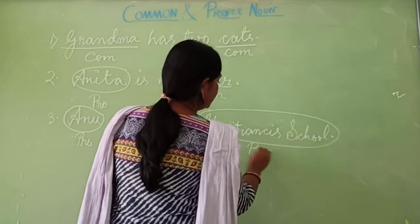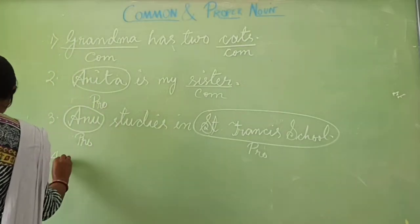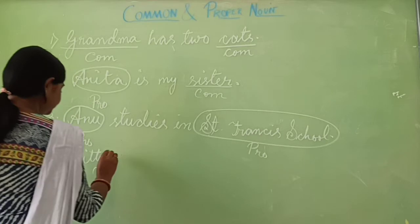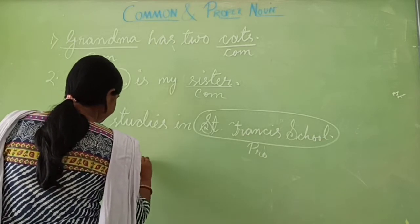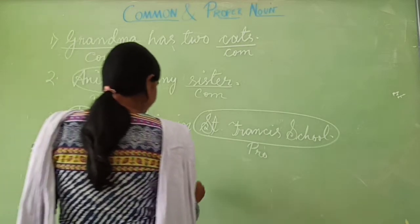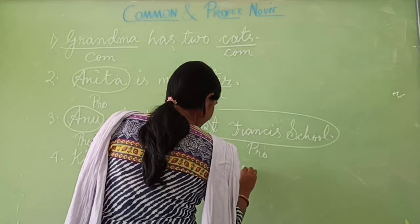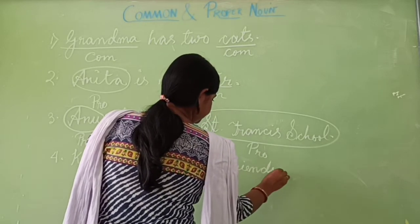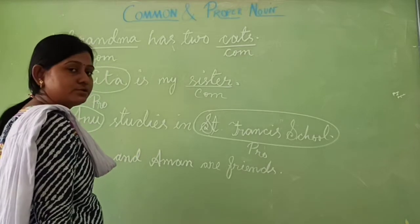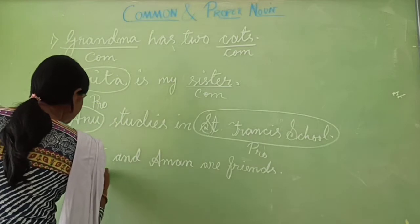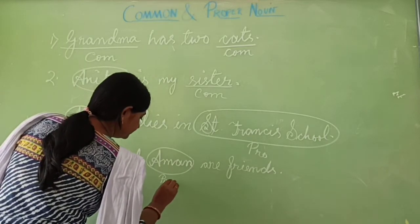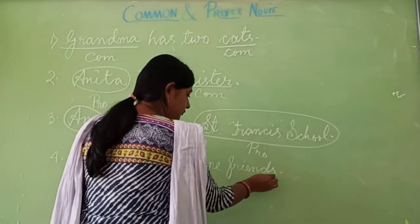Next sentence: Kitty and Amun are friends. Kitty is a special name of a person and Amun is also a special name of a person, so both are proper nouns. Friends is a common noun — we have many friends.